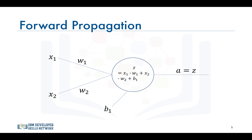Z is the linear combination of the inputs and weights along with the bias, and A is the output of the neuron. For consistency, we will stick to these letters throughout the course: Z will always represent the linear combination of the inputs, and A will always represent the output of the neuron.